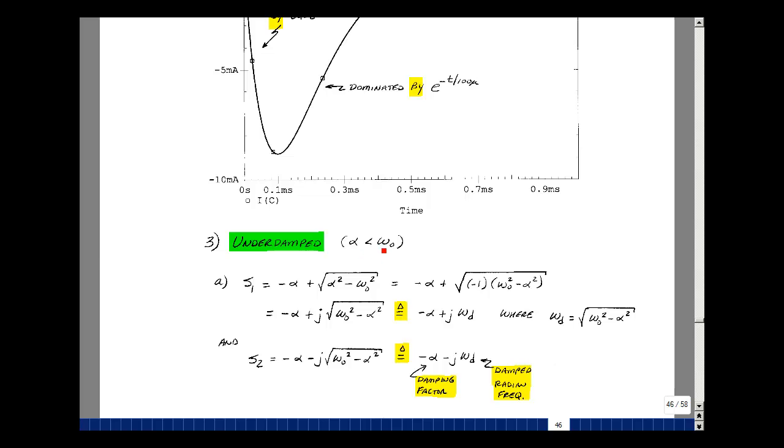The last possibility is that alpha is less than omega-naught. Let's go back to our values of S1 and S2 we found with the initial solution of that series RLC differential equation. Because alpha is smaller than omega-naught, this is actually going to be a negative number. So let's pull out a minus 1. We're left with the quantity omega-naught squared minus alpha squared, and this is going to be positive now for this particular case.